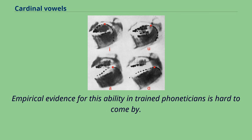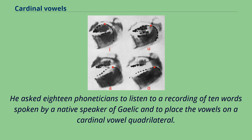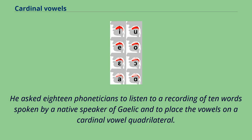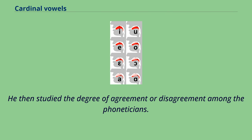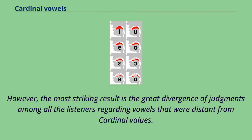Empirical evidence for this ability in trained phoneticians is hard to come by. Ladefoged, in pioneering experiments published in the 1950s and 60s, studied how trained phoneticians coped with the vowels of a dialect of Scottish Gaelic, asking 18 phoneticians to listen to a recording of 10 words spoken by a native Gaelic speaker and to place the vowels on a cardinal vowel quadrilateral. Phoneticians trained in the British tradition established by Daniel Jones were closer in their judgments than others, but the most striking result was the great divergence among all listeners regarding vowels distant from cardinal values.